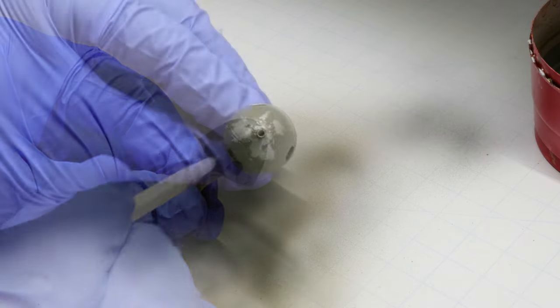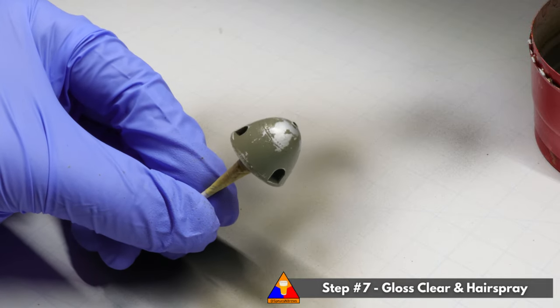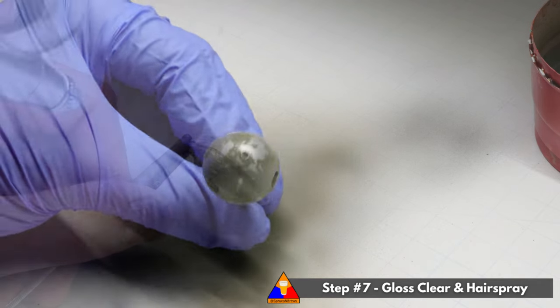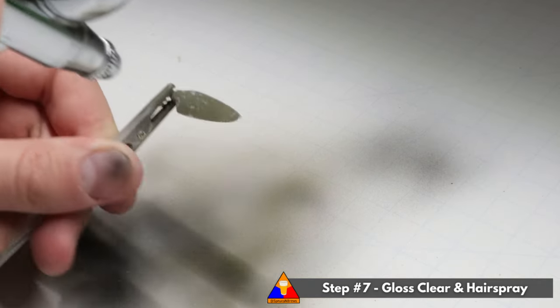Once we're done with the chipping, we're going to seal up that phase of the work with another coat of gloss varnish and then another coat of hairspray. The varnish is going to protect our RLM-02 primer layer and the hairspray will help us chip the next layer of painting.